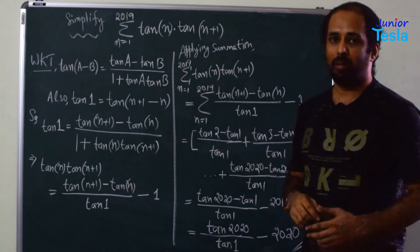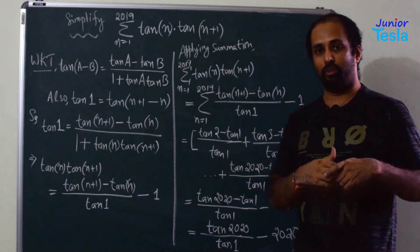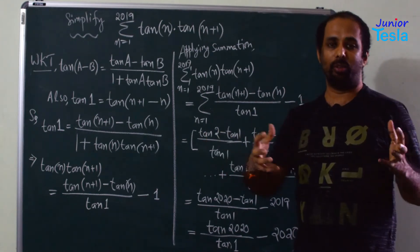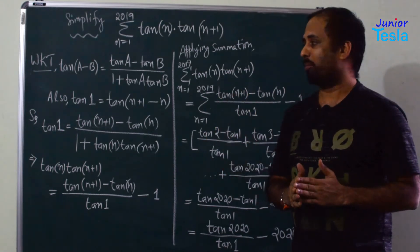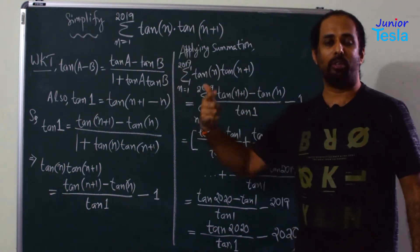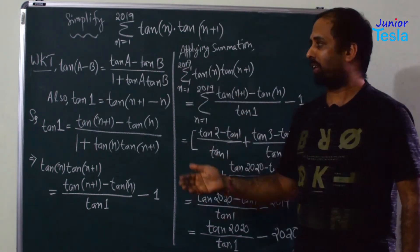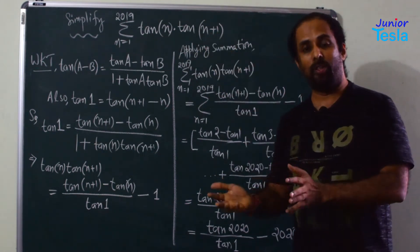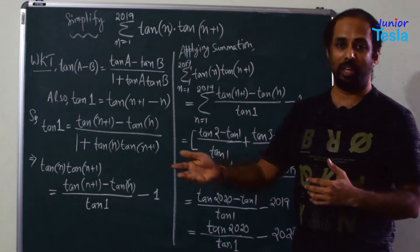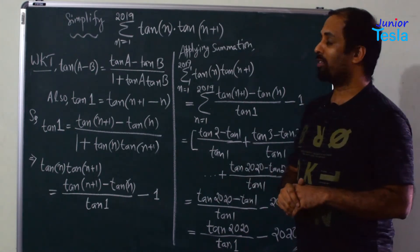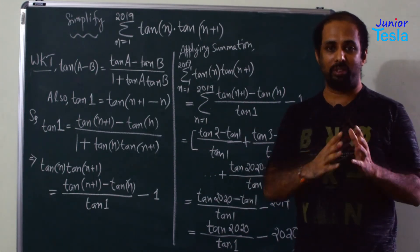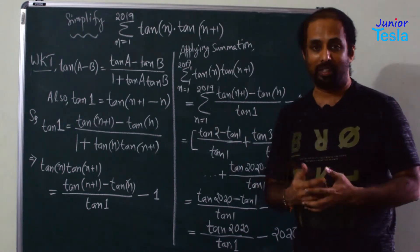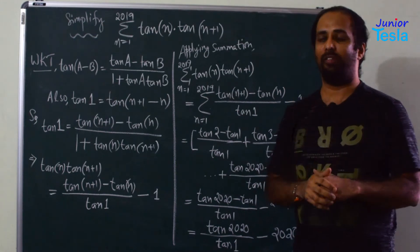The expression looks very simple, but actually it is a summation — you are seeing 2019 terms. So for tan(n), every time you put values for n equal to 1, 2, 3, etc., it will be tan(1)·tan(2) + tan(2)·tan(3) + tan(3)·tan(4), and so on, up to tan(2019)·tan(2020). Totally 2019 terms are there, and you are asked to simplify this and find a small final answer.